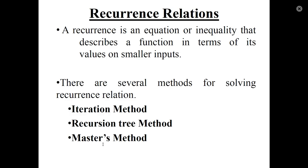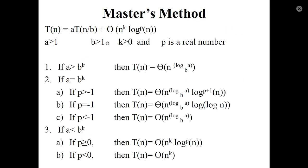Here I am going to discuss the Master's method. The recurrence relation should be of the form T(n) = a·T(n/b) + Θ(n^k · log^p(n)), where a ≥ 1, b > 1, k ≥ 0, and p is a real number.